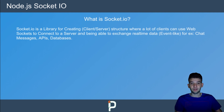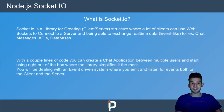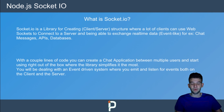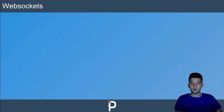Chat applications work using WebSockets, and Socket.io is a wrapper around WebSocket. You could go the hard way and use raw WebSockets, but most developers prefer Socket.io because it simplifies things. With just a couple of lines of code you can create a chat application between multiple users right out of the box. You'll be dealing with an event-driven system where you emit and listen for events both on the client and on the server — both sides can emit and listen.